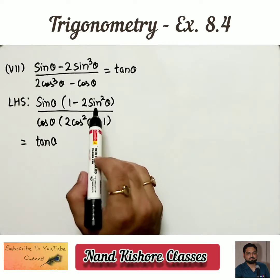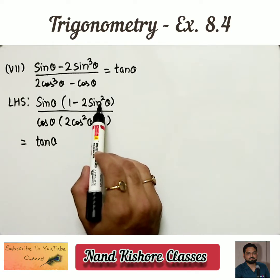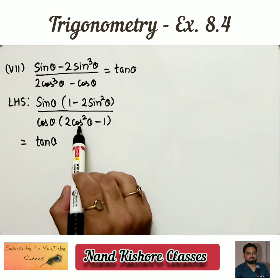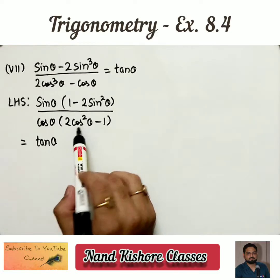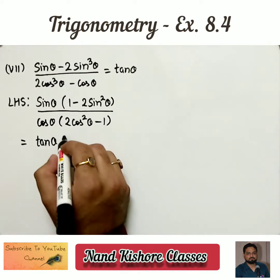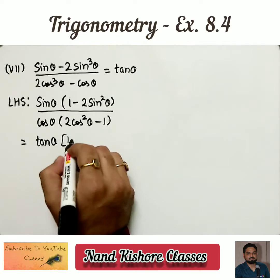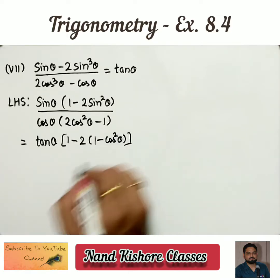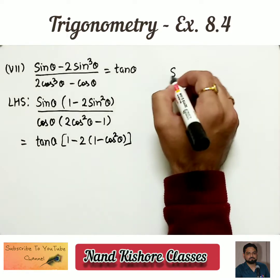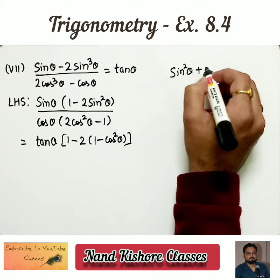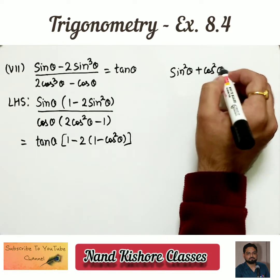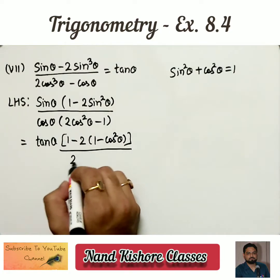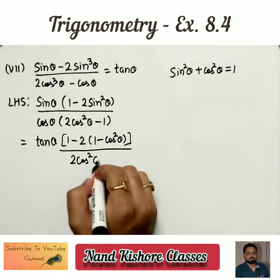What I am planning to do is either convert the sin square into cos, since I have cos in the denominator, or convert the cos in the denominator into sin. I am going to change sin square θ into cos using the formula sin square θ plus cos square θ equals 1.